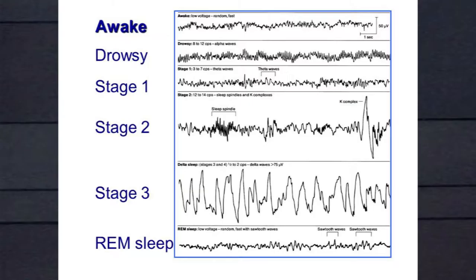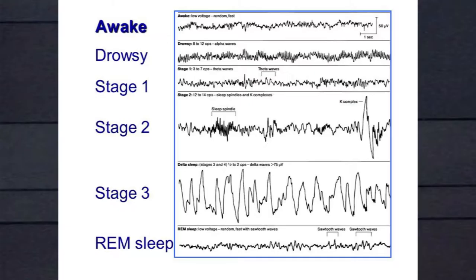REM sleep looks similar to the waveform when awake. REM sleep is actually a very active part of the night — oxygen consumption is up, glucose utilization is up, and the brain is actually active at that time.